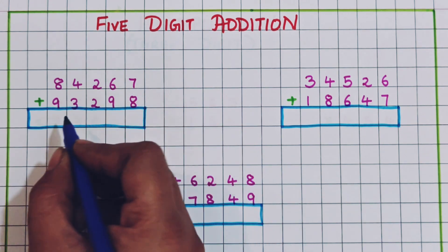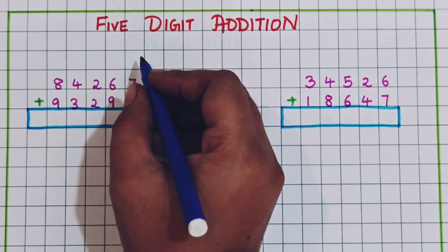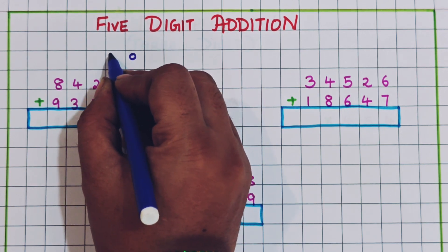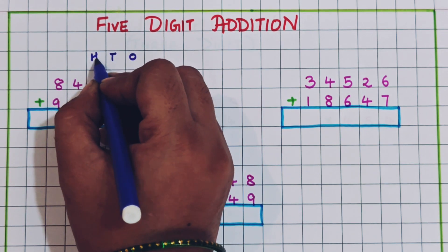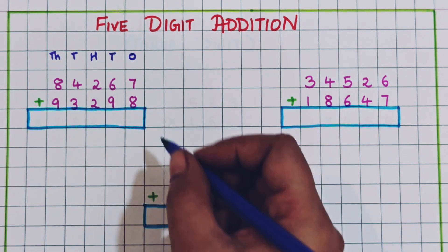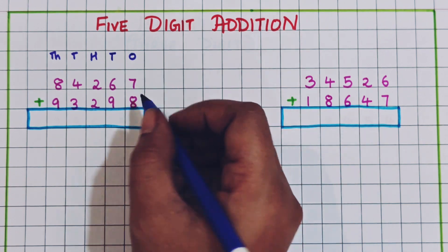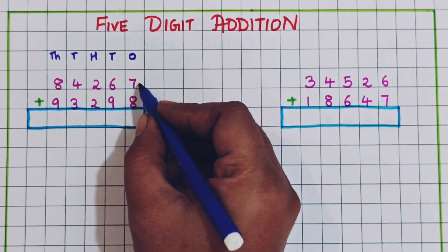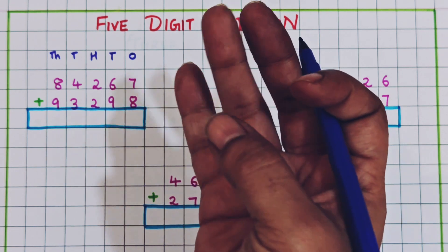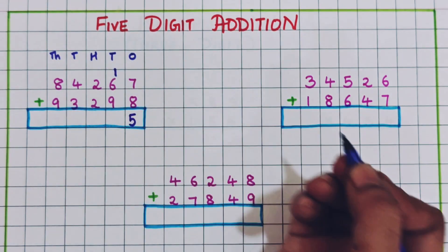84,267 plus 93,298. Here again we are going to assign the place value houses: ones, tens, hundreds, thousands, and ten-thousands. Addition always begins from the ones place. So 8 plus 7: counting up — 9, 10, 11, 12, 13, 14, 15 — so we write 1 as a carryover and 5 at the bottom.